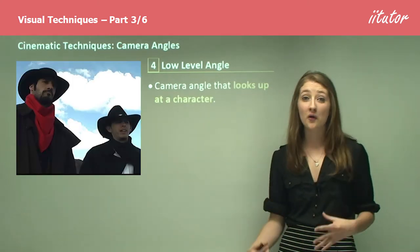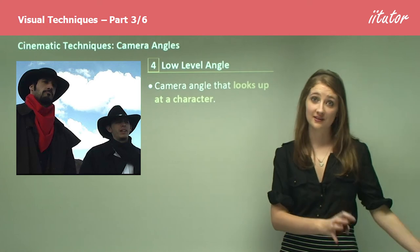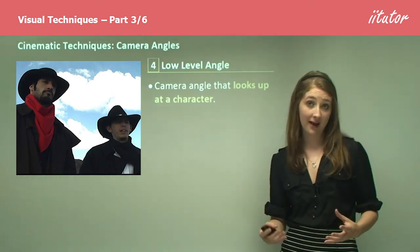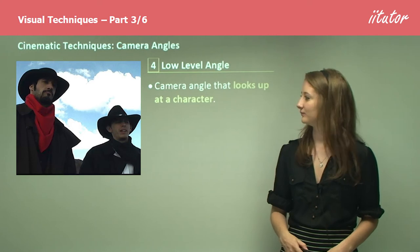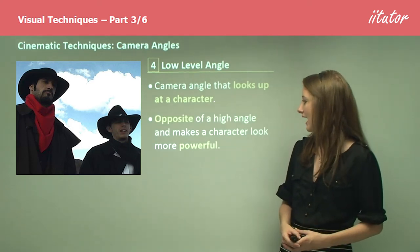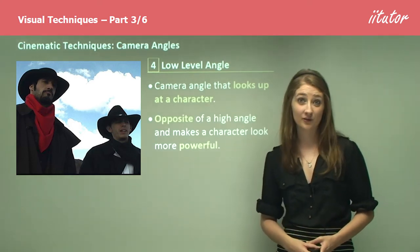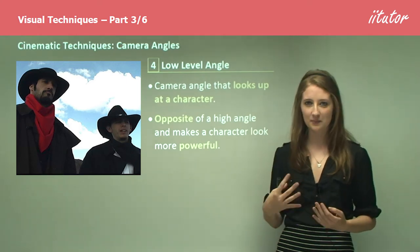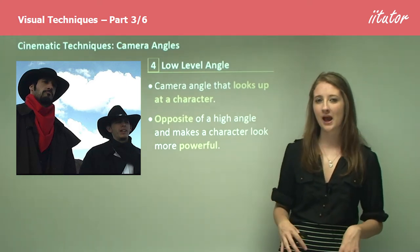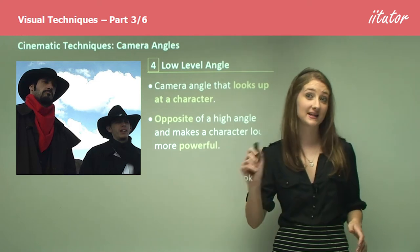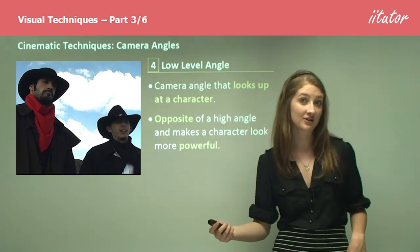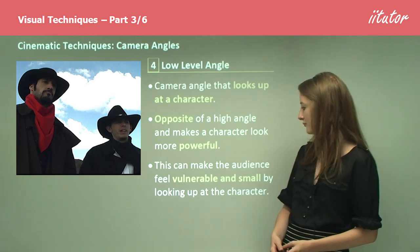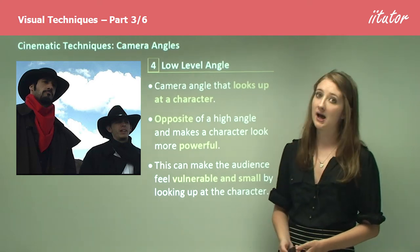We then get to the low angle, which is obviously the opposite of the high angle — the camera looks up at the character. This makes a character look more powerful because you're seeing them from below, like a smaller person gazing up at a bigger person, a large object, or a building. This can make the audience feel vulnerable and small by looking up at that character.